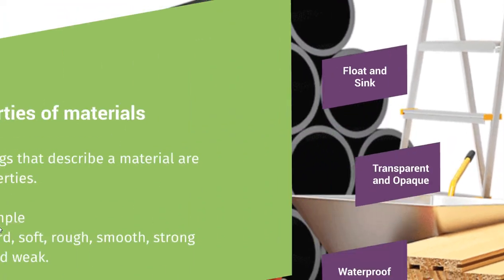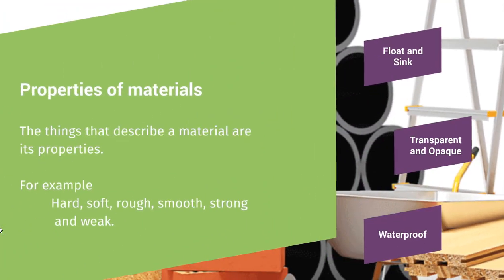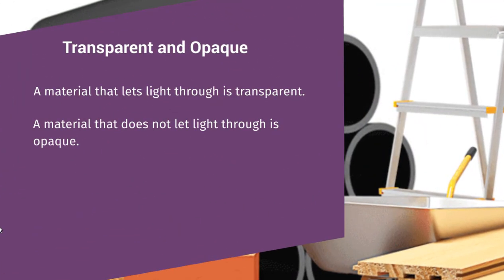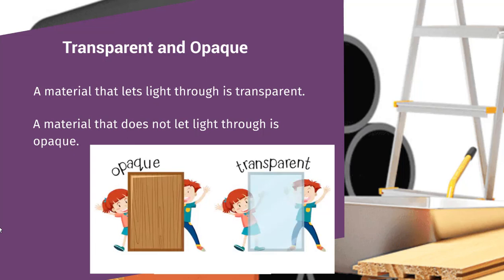After this, we will discuss transparent and opaque. What is transparent? A material that lets light through is transparent — for example, here is a transparent door. What is opaque? A material that does not let light through is opaque — here is a door made of an opaque material.